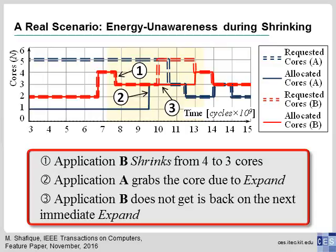This plot shows a real experiment using the Parsec application. There are three interesting points. At point one, application B shrinks from four to three cores, and this extra core is grabbed by application A at point two. At point three, application B wants to expand again but does not get its core back.